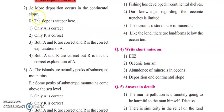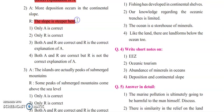Next assertion: more deposition occurs in continental slope. Reasoning: the slope is steeper here. In this case, only R is the correct option. The slope is steeper. Only R is correct because more deposition never occurs on the continental slope — where there is a slope, deposition will not occur. The slope is always steeper and never has any deposition on it.